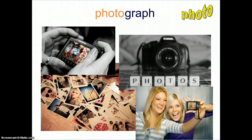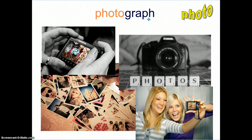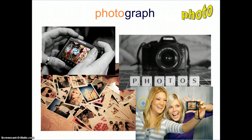Our next root is photo, which means light. Our first example is photograph. Graph is a root which means to write, and photo means light. A photograph is capturing the light in an area and, in a sense, writing it down on paper, which is what becomes a photograph.